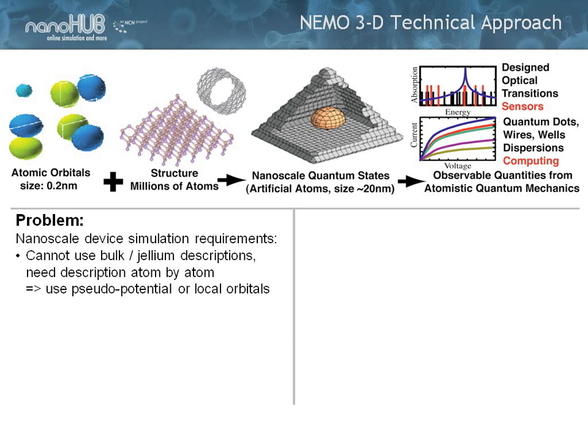The key element that we learned from NEMO 1D is that you cannot do nanoelectronics with just effective mass, or continuum models for that matter. At 2, 3, 4, 5 nanometers, the number of atoms in that dimension is countable. So you have to have an atomistic representation.